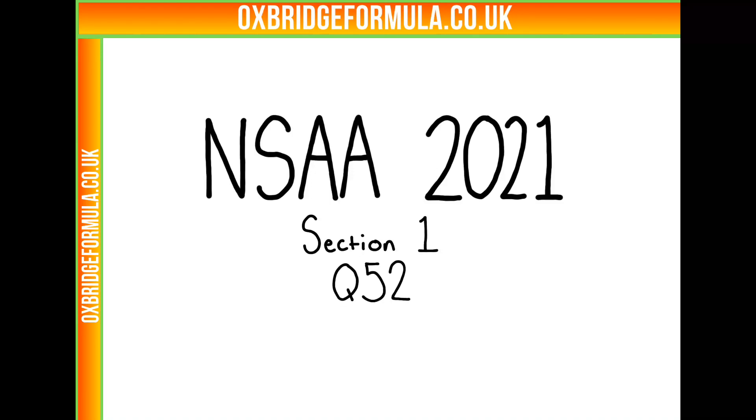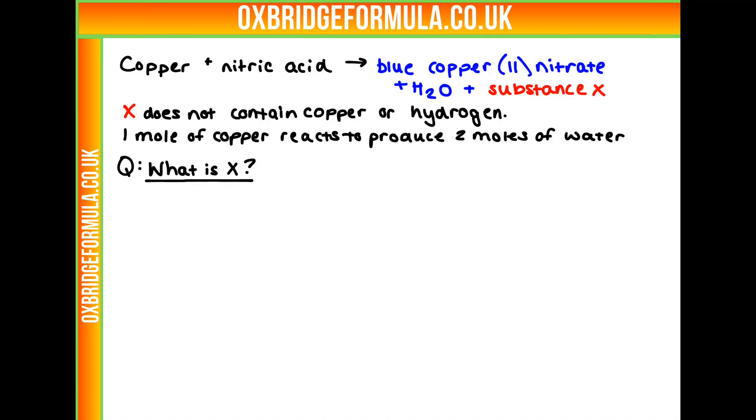This is ENSA 2021, section 1, question 52. We're told that we are reacting copper with nitric acid to form blue copper(II) nitrate plus water plus a substance X.